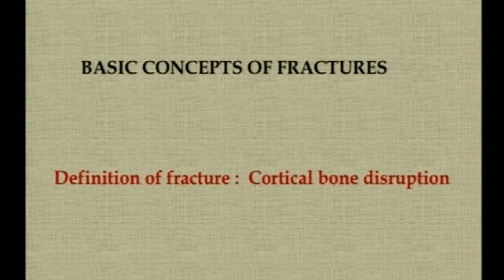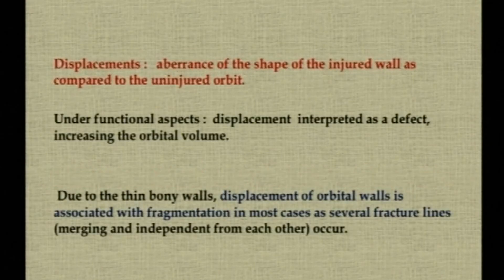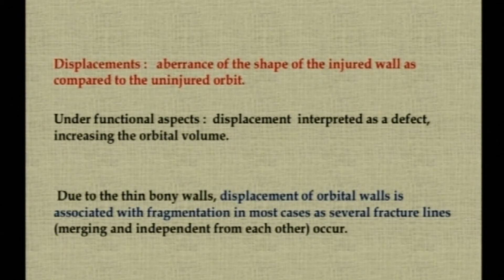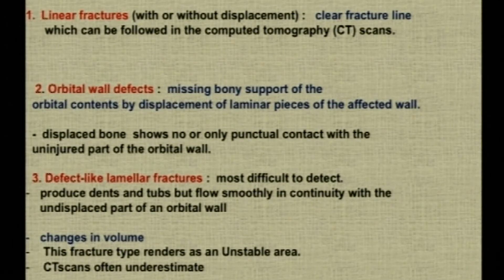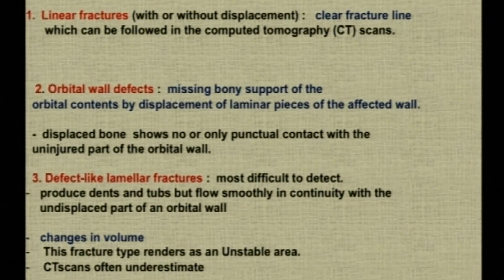Regarding the basics of fractures: a fracture is defined as cortical bone disruption, while displacement is the aberrance of the shape of the injured wall compared to the uninjured wall. In the orbit, displacement must be interpreted as a defect, as it leads to increased orbital volume. Since orbital wall bones are thin, displacement is usually associated with fragmentation. Orbital fractures can follow three patterns: a linear fracture with a clear fracture line on CT; an orbital wall defect where the bony wall is missing and orbital structures herniate; or a lamellar fracture — the most difficult to detect — which produces dents but flows smoothly in continuity with the undisplaced orbit. Every 1 cc increase in orbital volume leads to 0.77 mm of enophthalmos.